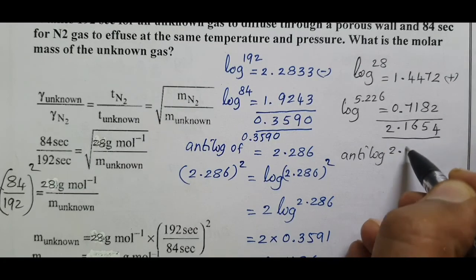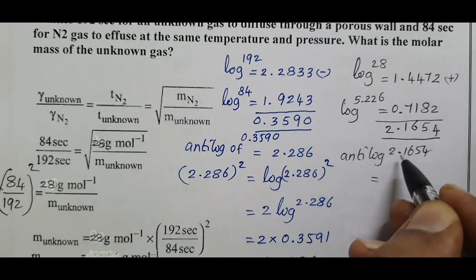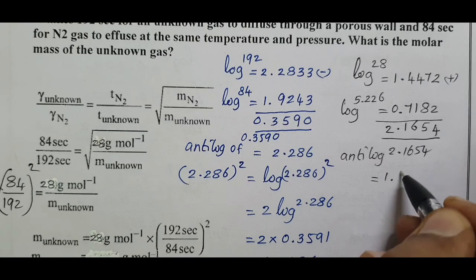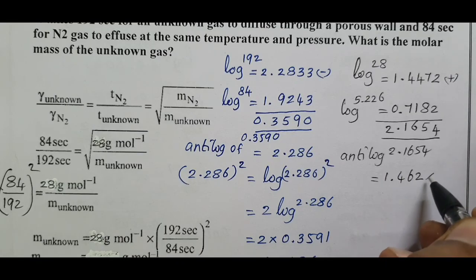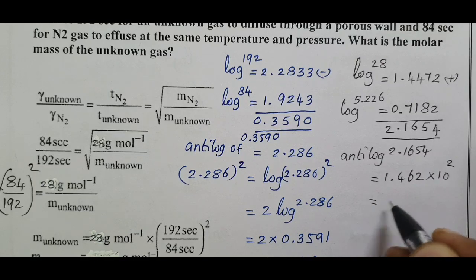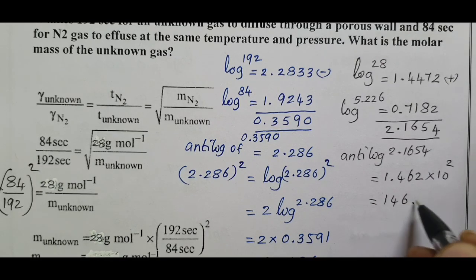Antilog of 2.1654, that is equal to antilog of 0.1654 equals 1.462. Here can be 2, so 10 power 2 all multiple, answer 146.2.